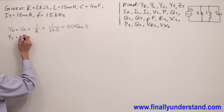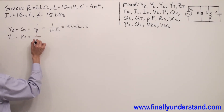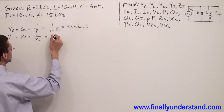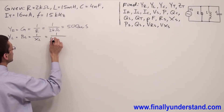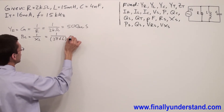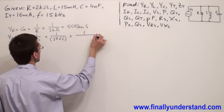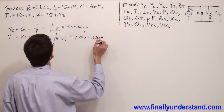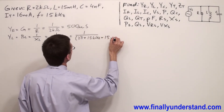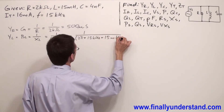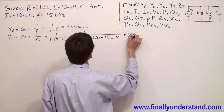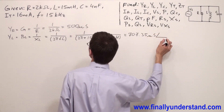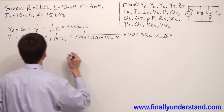Next we're supposed to find the admittance of the inductor, which is nothing else just B_L. This is equal one over X_L, but please notice that X_L is not given — we have L given. That's why I'm going to write this formula as one over X_L equals one over two pi f L. So this is equal one divided by two pi times f, 15 kilohertz, times L which is equal 15 mH. This is equal 707.35 microsiemens and angle of negative 90 degrees.